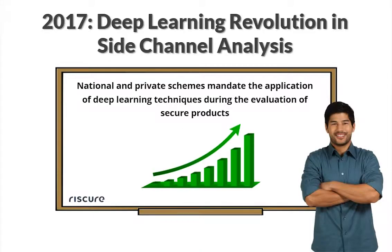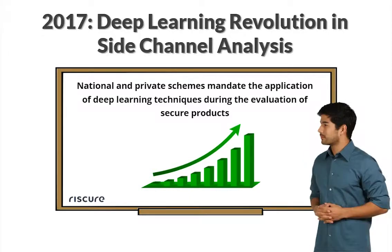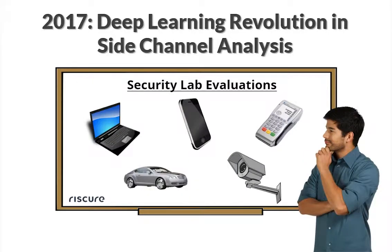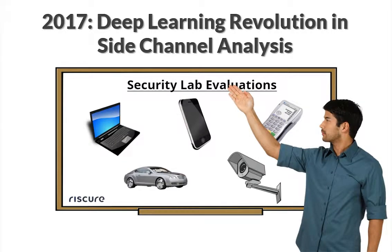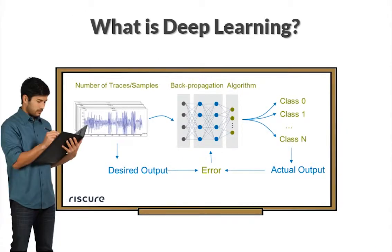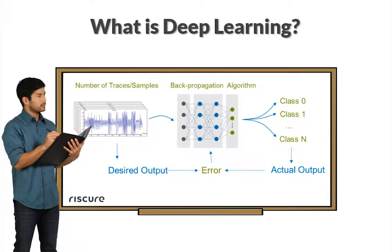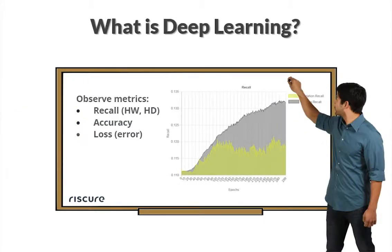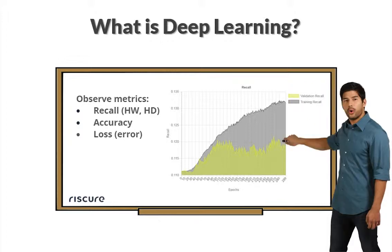Since 2017, several national and private schemes mandate the application of deep learning in side channel analysis evaluations of secure products. Deep learning is a machine learning technique that uses a neural network to classify datasets, and it can be used as a tool to assess the presence of side channel leakage.